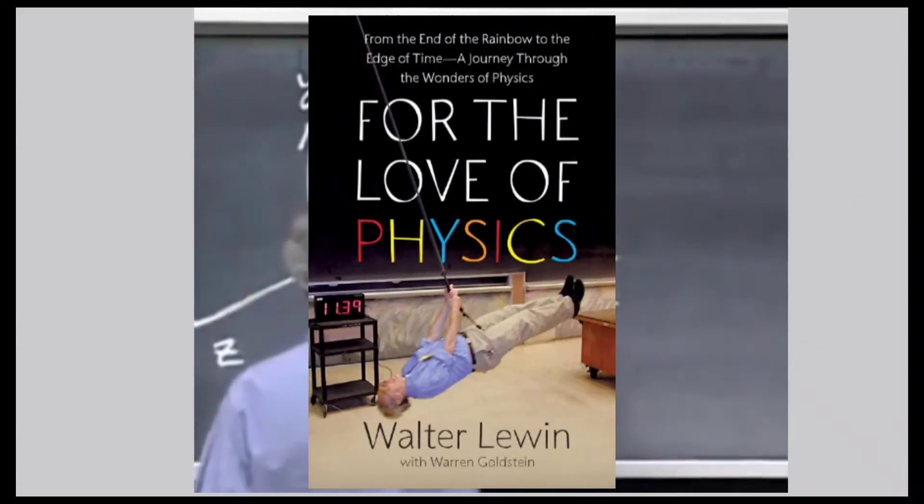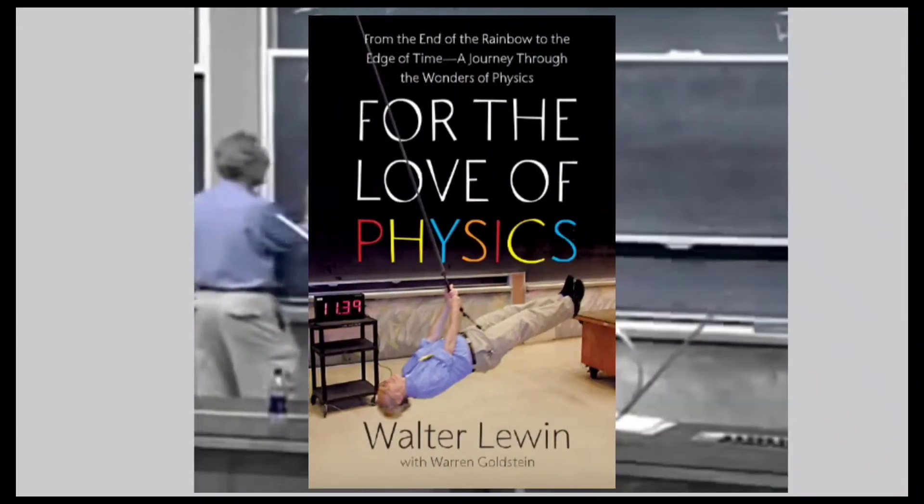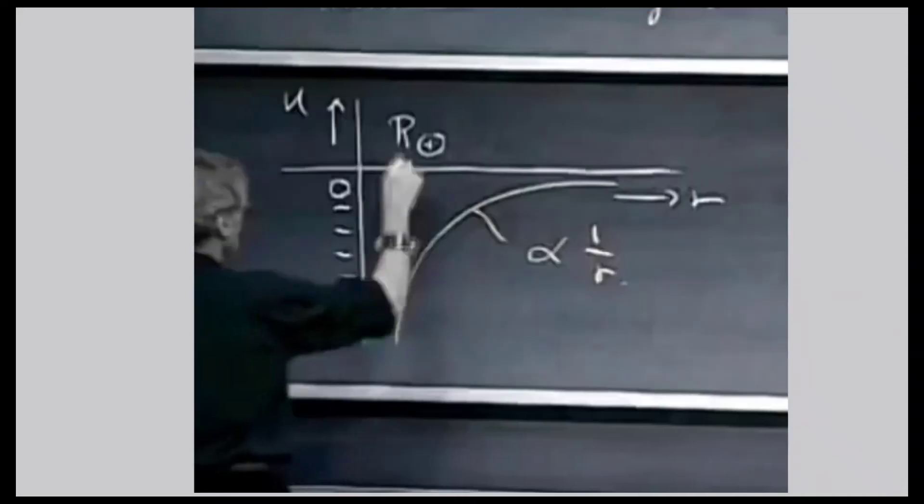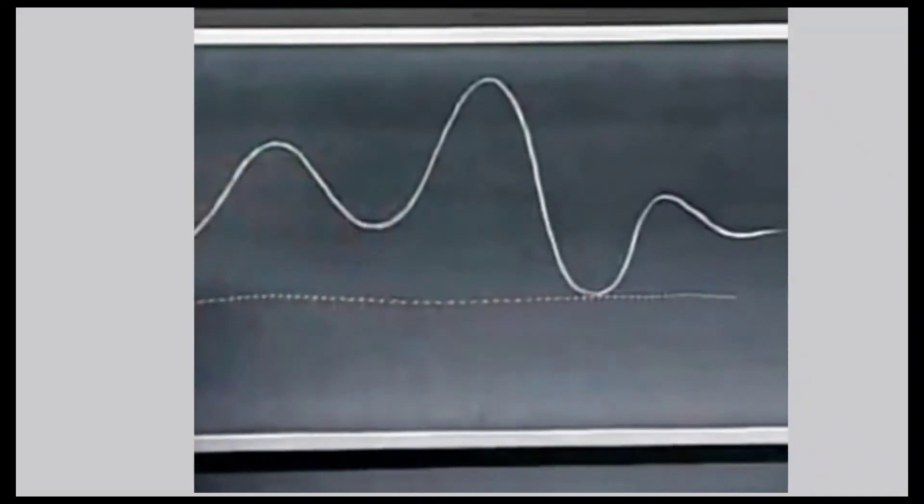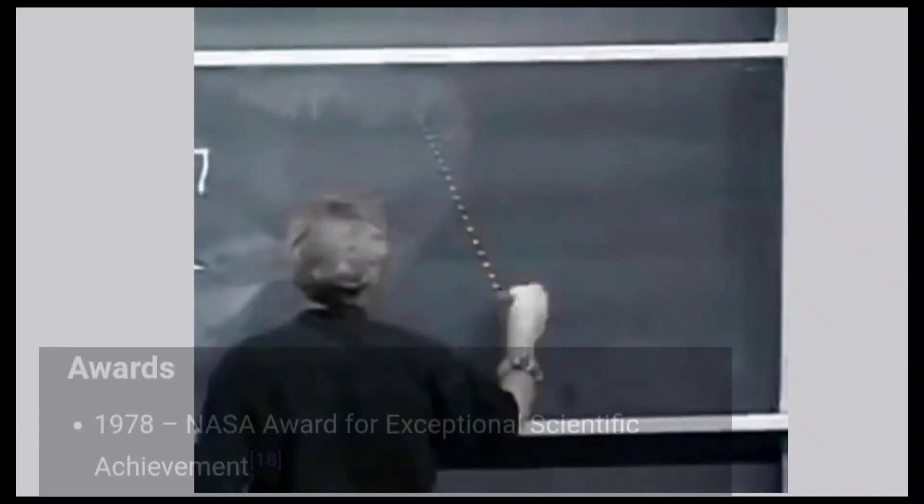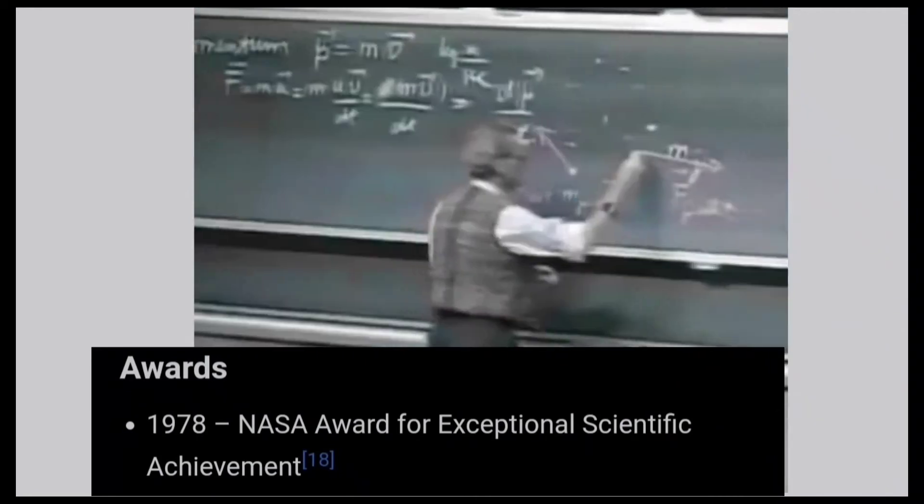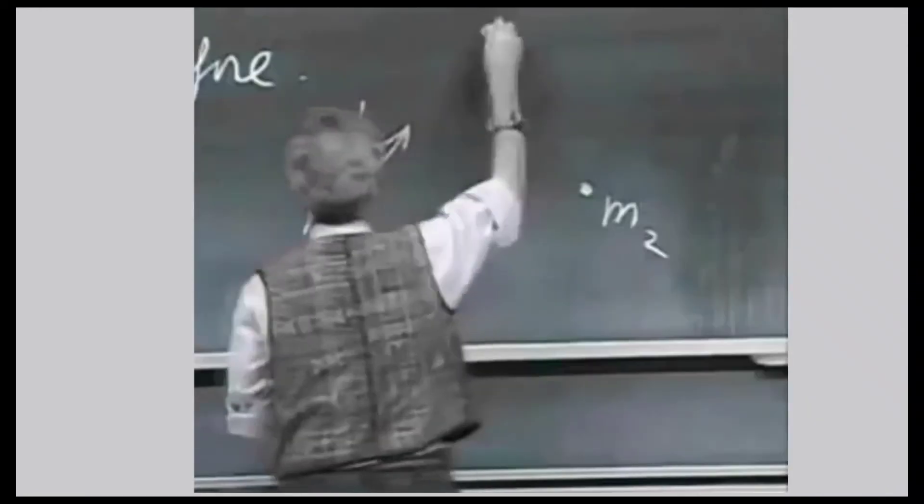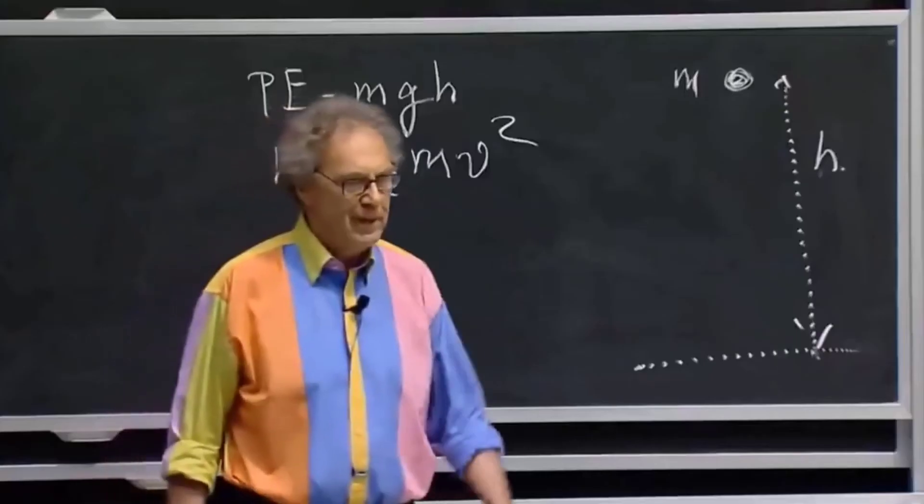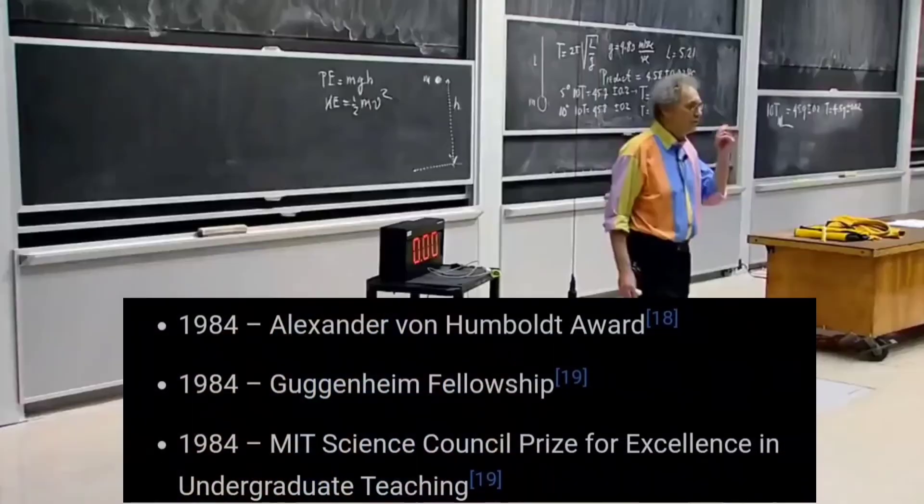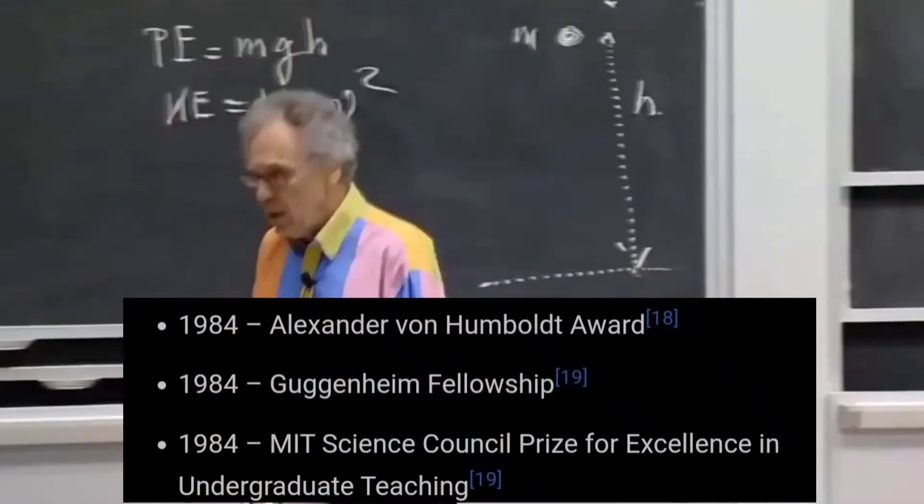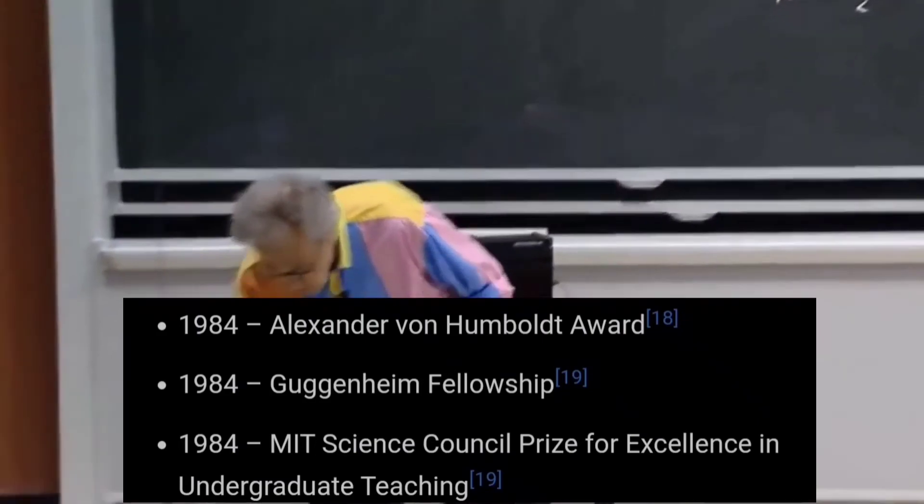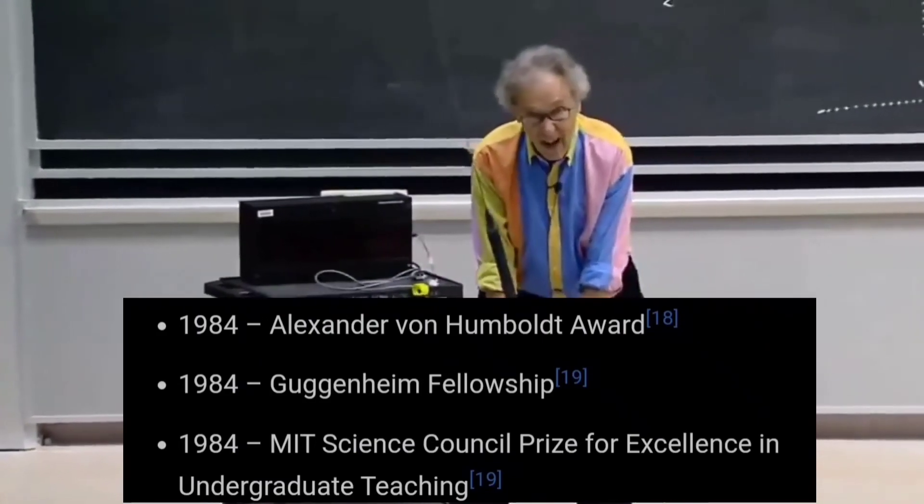He wrote a book, For the Love of Physics: From the End of the Rainbow to the Edge of Time, available in various languages. He has received many awards. In 1978, he got NASA Award for Exceptional Scientific Achievement. In 1984, he received the Alexander von Humboldt Award, Guggenheim Fellowship Award, and MIT Science Council Prize for Excellence in Undergraduate Teaching.